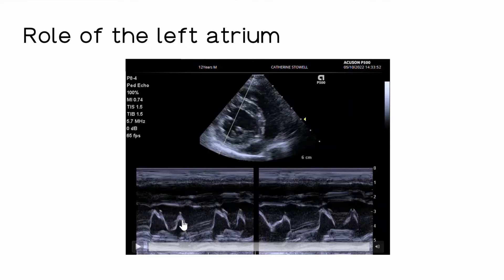It's this atrial kick that's lost in atrial fibrillation, for example. It also struggles in conditions that raise diastolic pressures, such as hypertrophic cardiomyopathy. When end diastolic pressures in the left ventricle are high, left atrial pressures have to raise as well, and that's what causes dilatation in those conditions.